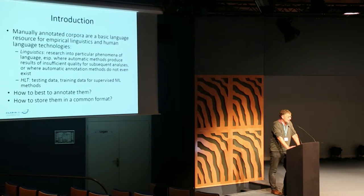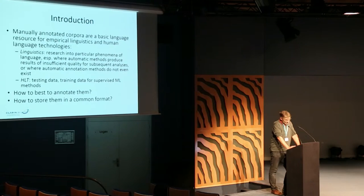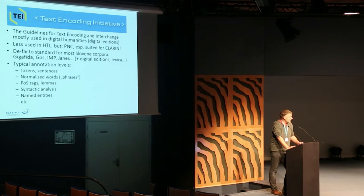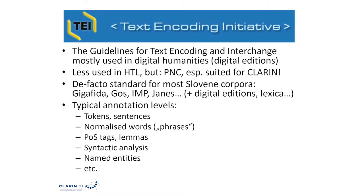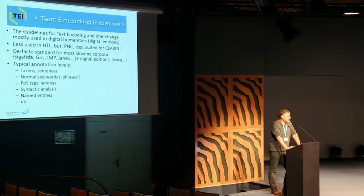The first question is how we should do this — what platform to use, workflow, and so on. And the other question is how to store annotations in a common, standard format, so we can deposit them into our repositories. Text Encoding Initiative — I'm sure most of you know what it is. It's kind of the most comprehensive set of guidelines, more or less a de facto standard on how to encode various types of texts and various types of interpretative information over texts in the humanities.